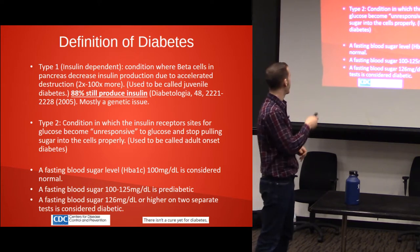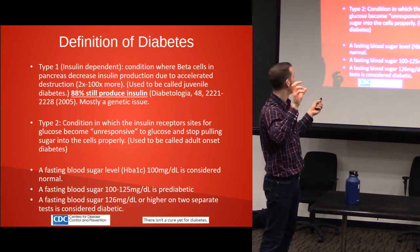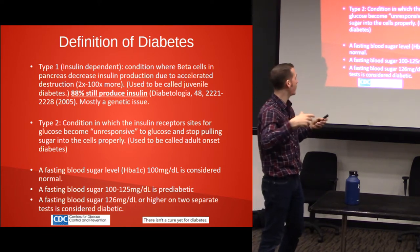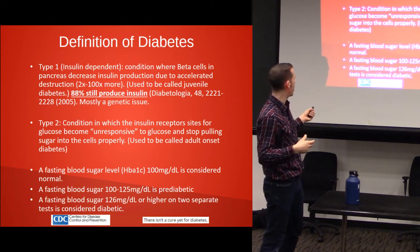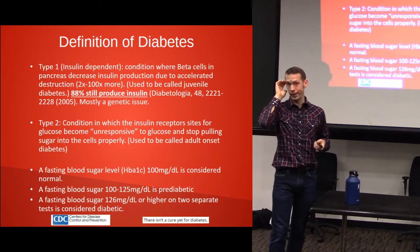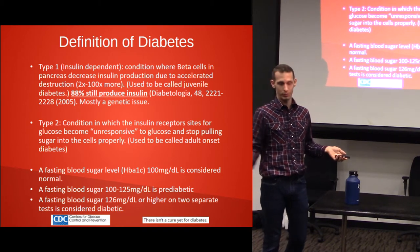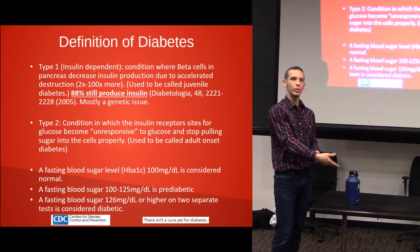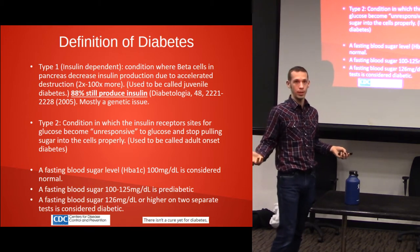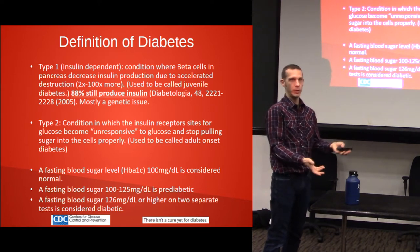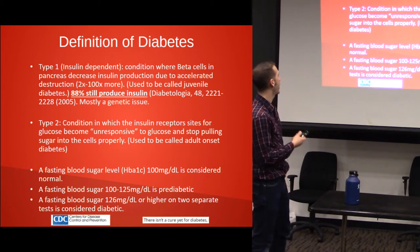Type 2 diabetes is a condition in which the insulin receptors become unresponsive to glucose — it stops pulling sugar into the cells properly. This used to be called adult onset, but it's happening in children and even in infants now. We're getting nine, ten, twelve-month-old children with type 2 diabetes. Why? We think it's an environmental cause. Obviously they're eating mostly breast milk and still getting type 2 diabetes, so I'm going to go into all the sources of that.